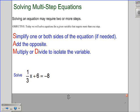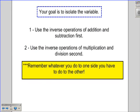The first problem we're going to look at today is one-third x plus six equals negative eight. So first, our goal is to isolate that variable. We're going to use the inverse operations of addition and subtraction first. We're going to use the inverse operations of multiplication and division second.